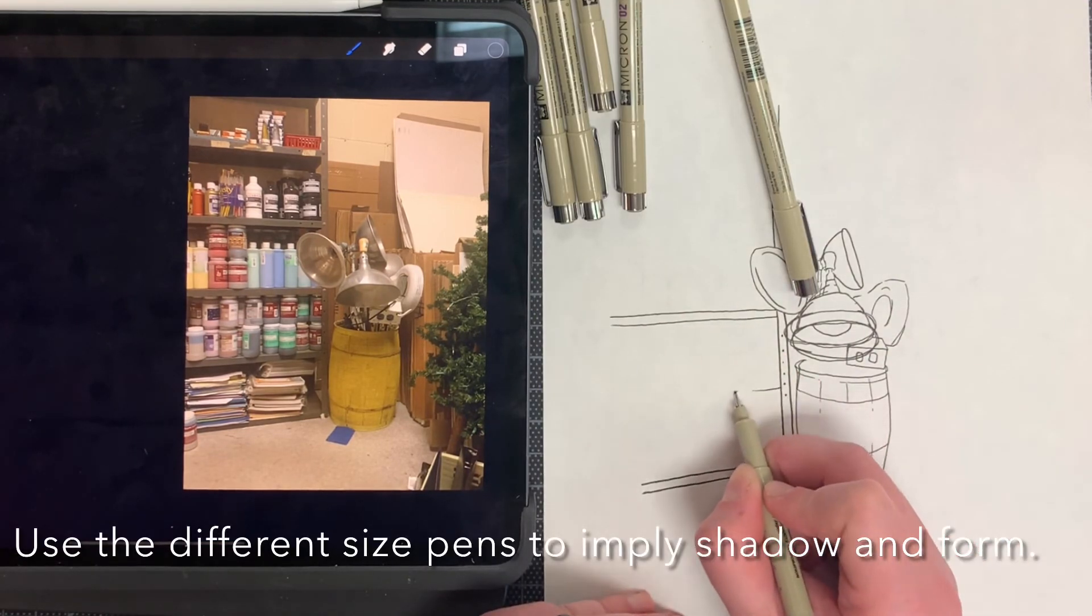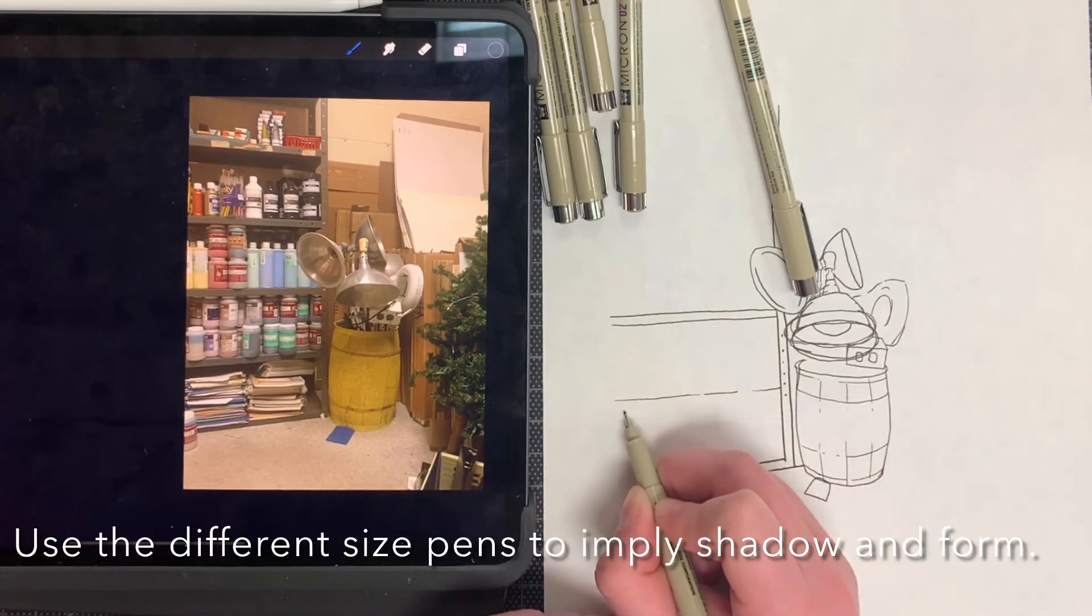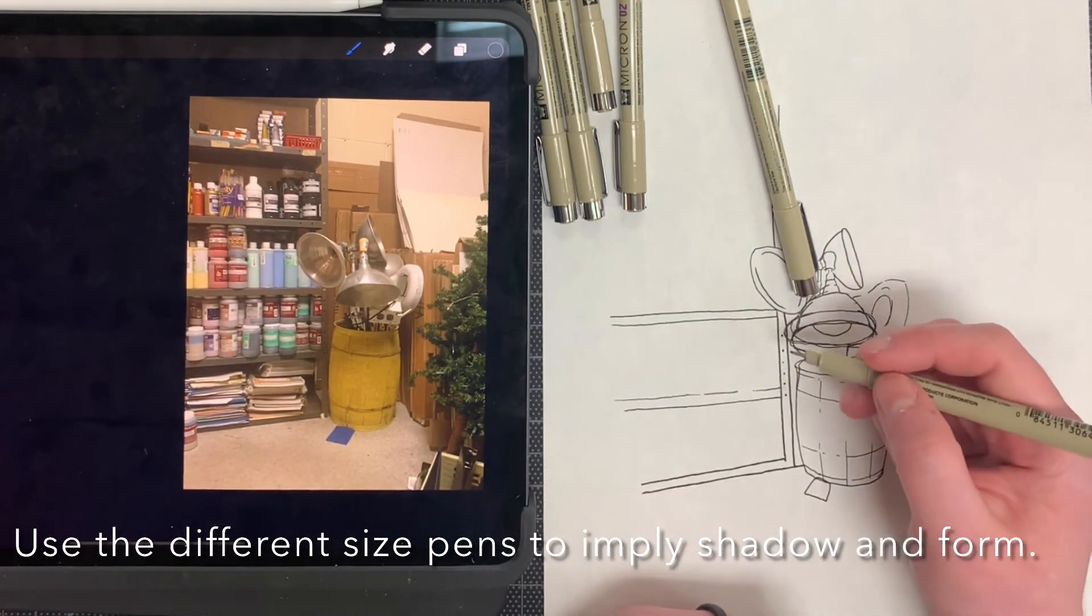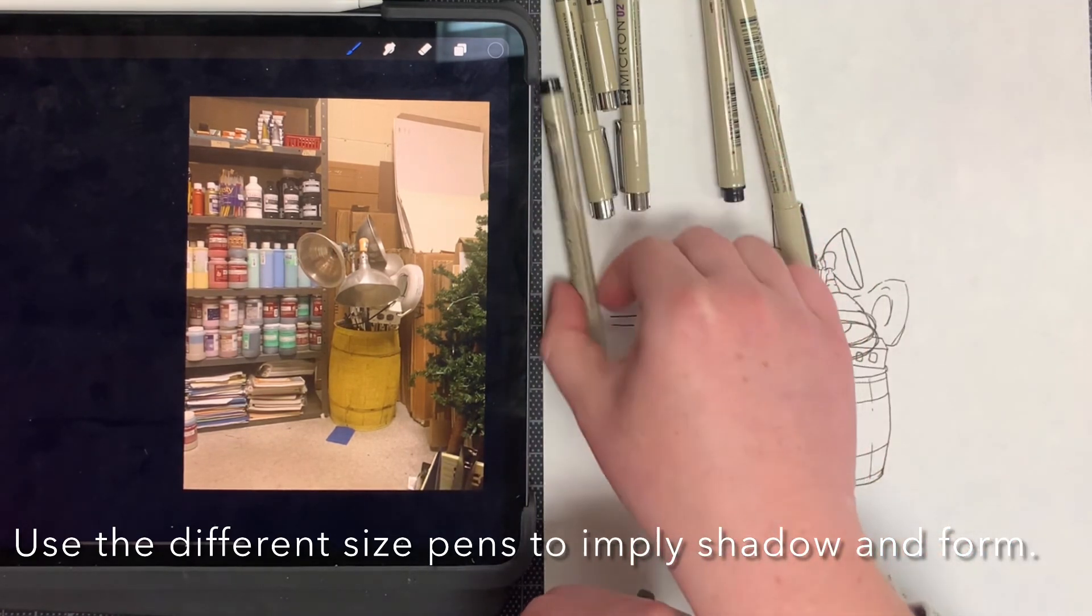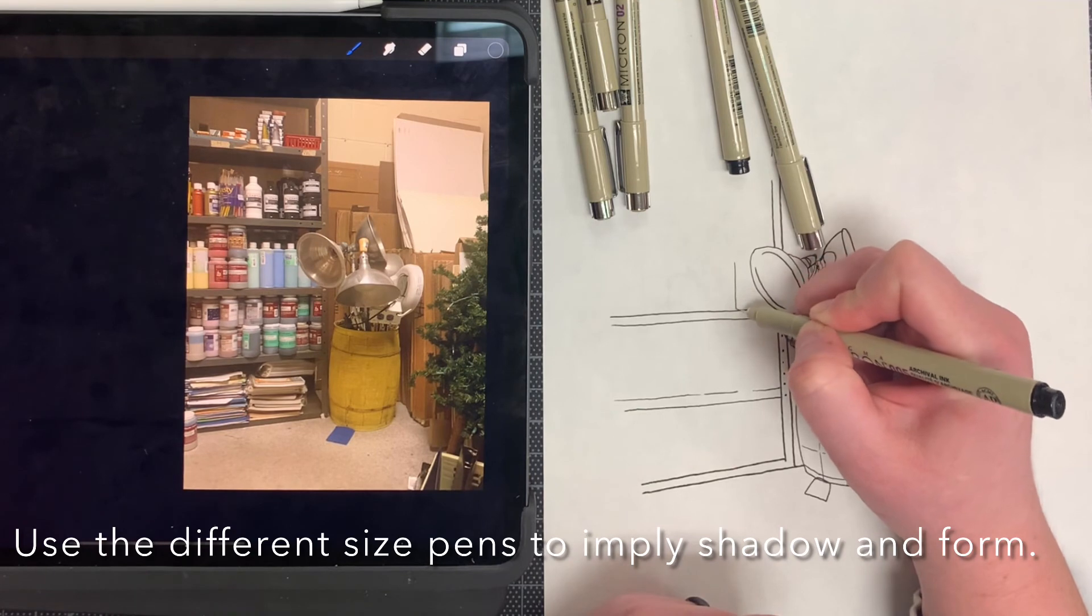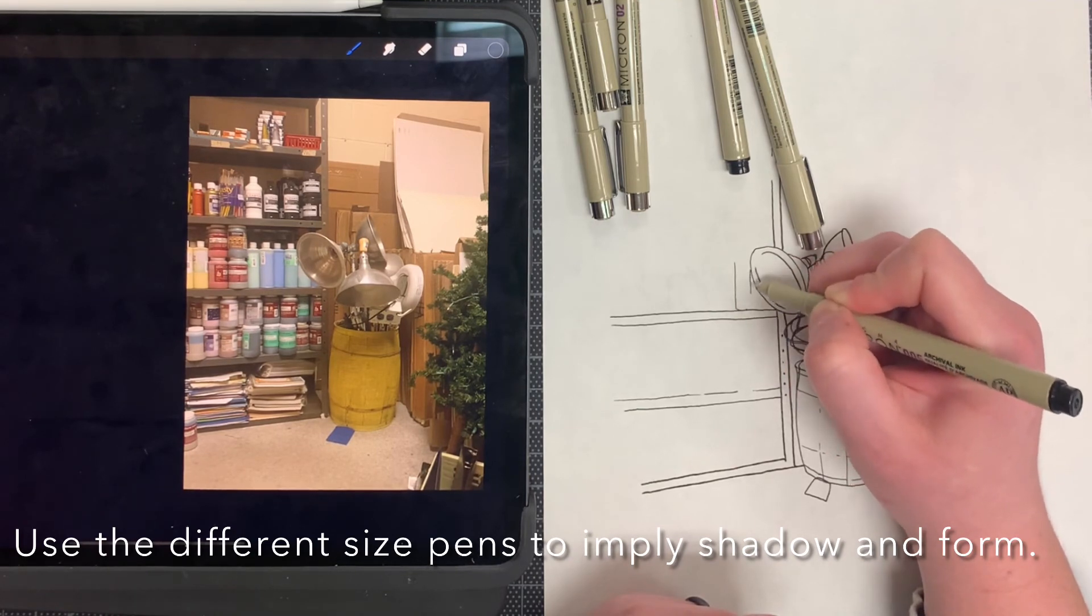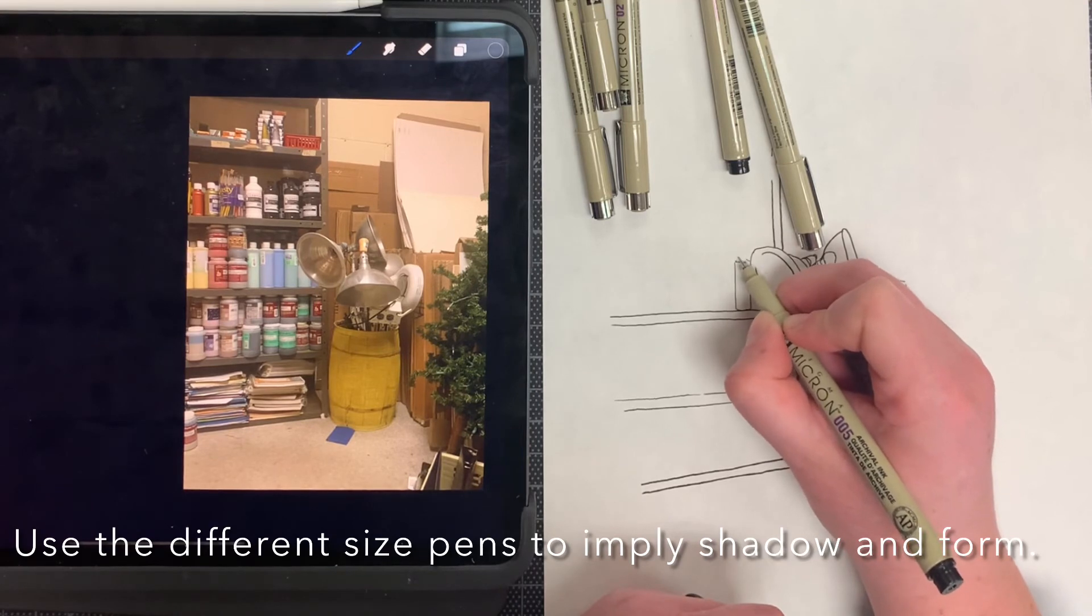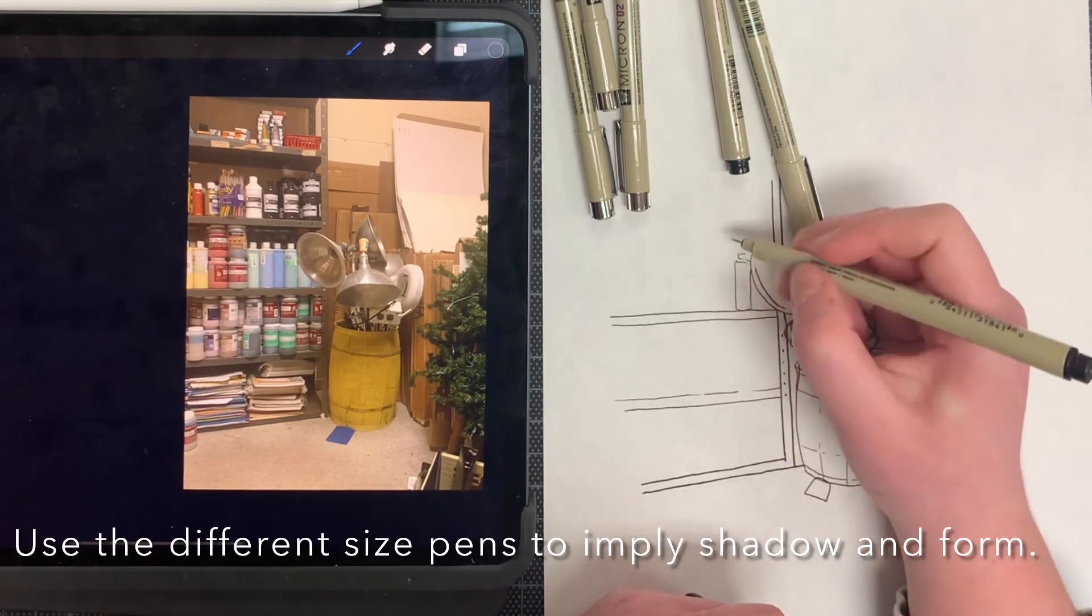Next, I want you guys to use the different size pens to help imply shadow and form. So for objects that are lighter or have a lighter value to them, I recommend using the smaller micron pens like the 0.005, 01, or 0.02. For objects that are heavier or are in shadow, I want you to switch pens for them and use the bigger micron pens like the size five or size eight.